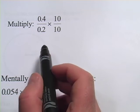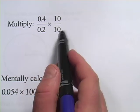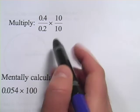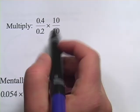Here we have some problems where we're multiplying decimals by powers of 10: 10, 100, 1,000, et cetera. And there are some quick and easy shortcuts that'll help you out with these.